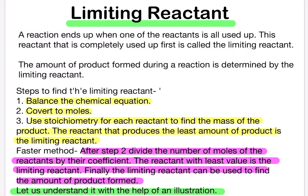Today we are going to study about limiting reactant. When a reaction ends and one of the reactants is all used up, that reactant which is completely used up first is called the limiting reactant — sometimes also known as limiting reagent. The amount of product formed during a reaction is determined by the limiting reactant.